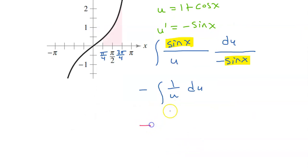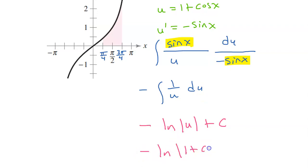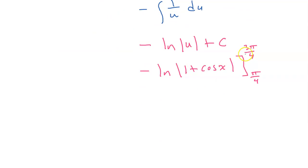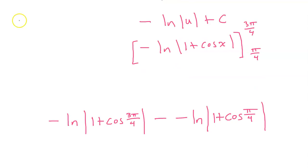We know that the integral of 1 over u is natural log absolute value of u, plus c. But u was 1 plus cosine x, so we have negative natural log absolute value of 1 plus cosine x. It is time to put the limits of integration back in, so we want to evaluate from pi over 4 to 3 pi over 4. This means we need to find the value at 3 pi over 4 and subtract the value at pi over 4. Of course, minus a negative is a positive, so I'll just put a plus sign right here.